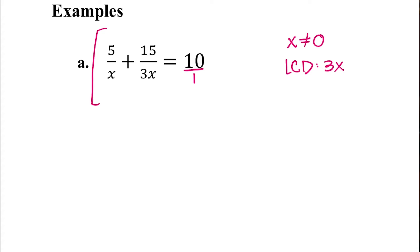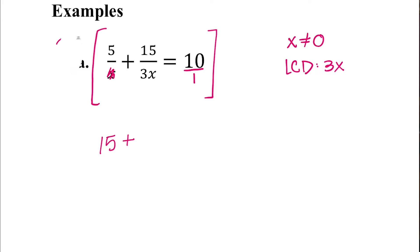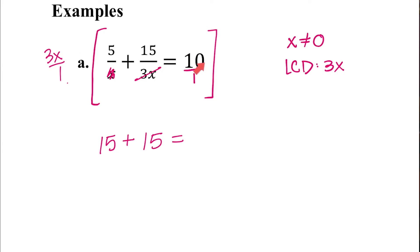So what you're going to do next is multiply the entire equation by that least common denominator. When you do 3x times 5 over x, the x's will cancel, and you're just left with 3 times 5, which is 15. Then we have the LCD multiplied by 15 over 3x — the 3x cancels out with the 3x on bottom, so we just get 15. And then on the last one we're multiplying 3x over 1 by 10, so nothing cancels, and we have 3x times 10, which is 30x.